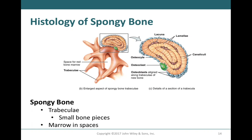Spongy bone has a very similar structure to compact bone; however, we don't see a central canal and we don't call the units osteons. We still see different layers of bone matrix known as lamellae, and coursing through them are canaliculi allowing osteocytes to link up. Osteocytes are still found in lacunae, and there are osteoblasts on the outside making new bone and osteoclasts breaking it down. The spaces between the spongy bone trabeculae are where red bone marrow is found.